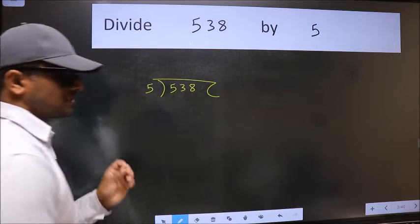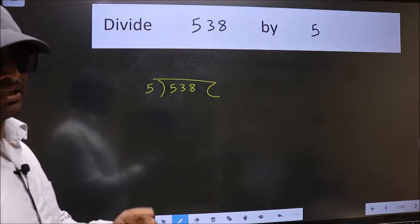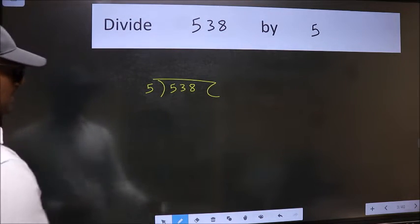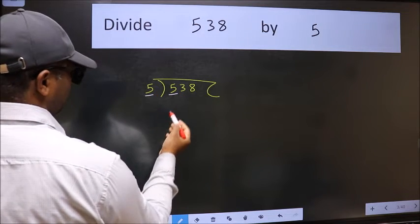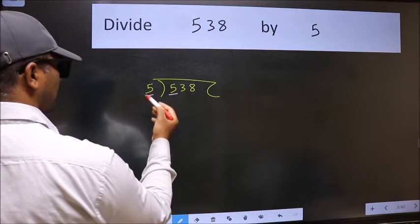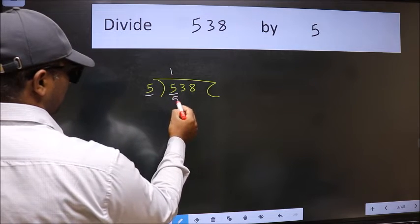This is your step 1. Next, here we have 5 and here also 5. When do we get 5 in the 5 table? 5 times 1 is 5.